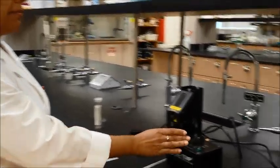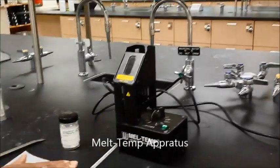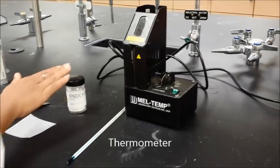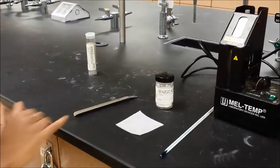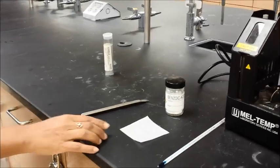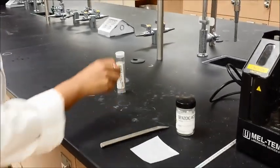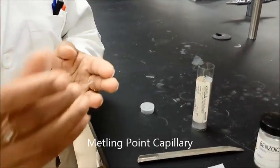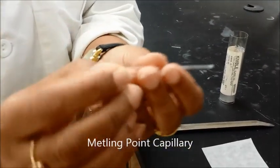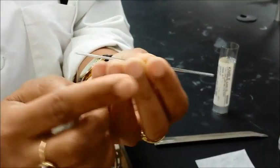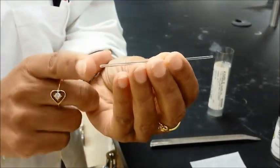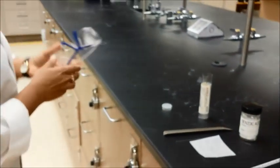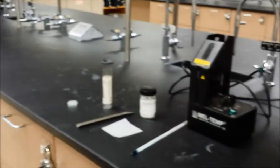You will need a melt temp apparatus, you will need a thermometer, you will need a sample, and you will need a weighing paper or a filter paper, you will need a spatula, and then you will also need a capillary which is called a melting point capillary because it's closed on one side and it's open on the other side. So you will put your sample through here and this is the closed ended side. So these are the things that you need for your melting point determination.